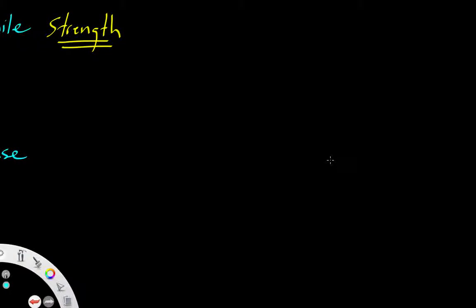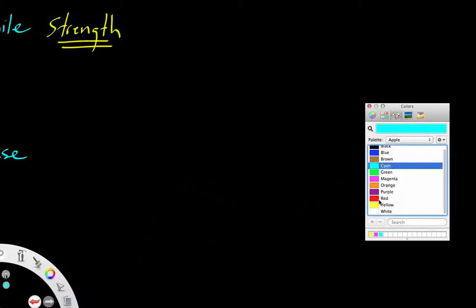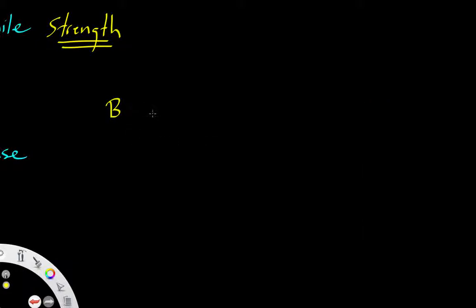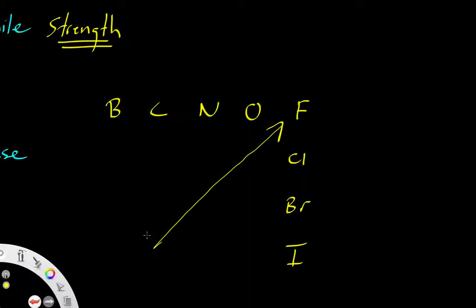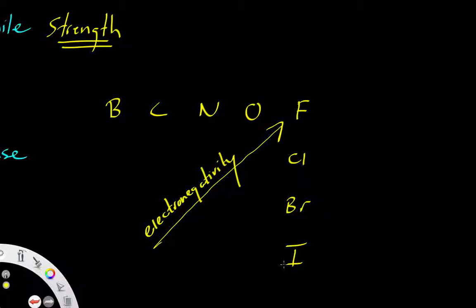Now let's look at a portion of the periodic table of elements. I can show B, C, N, O, F, Cl, Br, and I, and I drew it this way to demonstrate the trend in electronegativity — with fluorine being the most electronegative atom on the periodic table. This is actually pretty easy to memorize, and I would highly recommend doing it since you use these atoms so often.